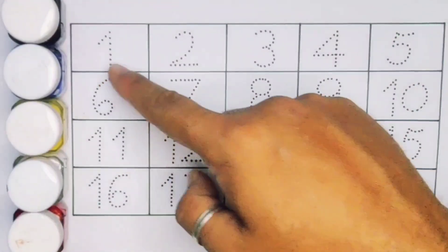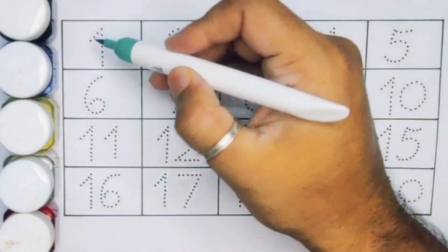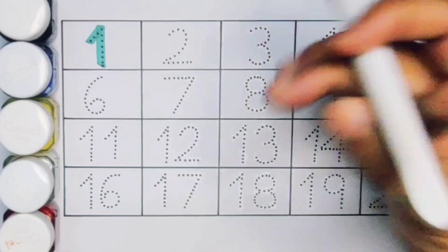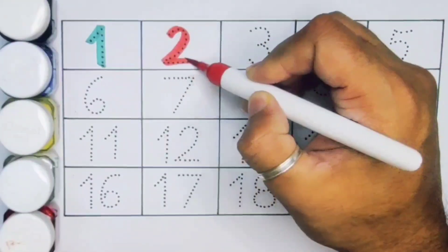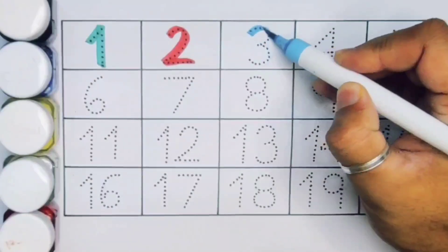Now let's learn the numbers counting 1 to 20. First 1, number 1. Next kids 2, number 2. Next kids 3, number 3.